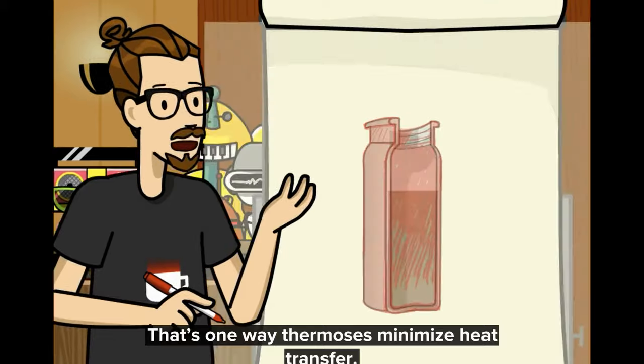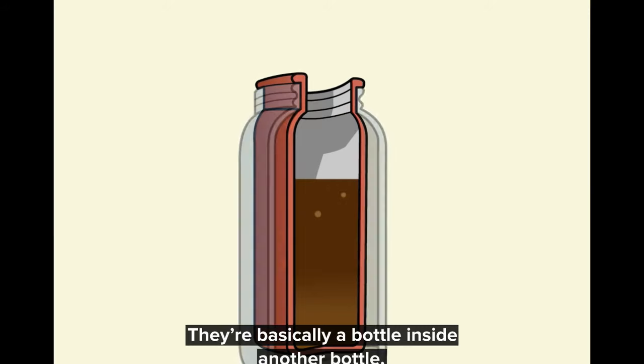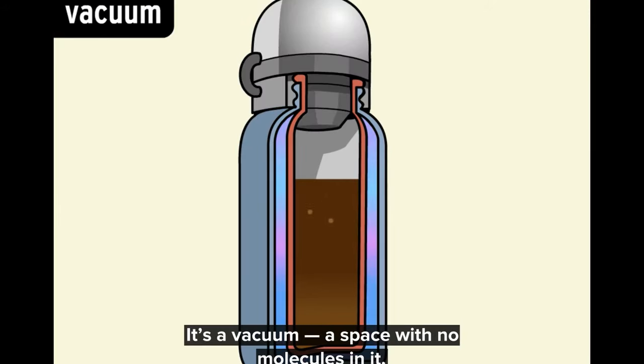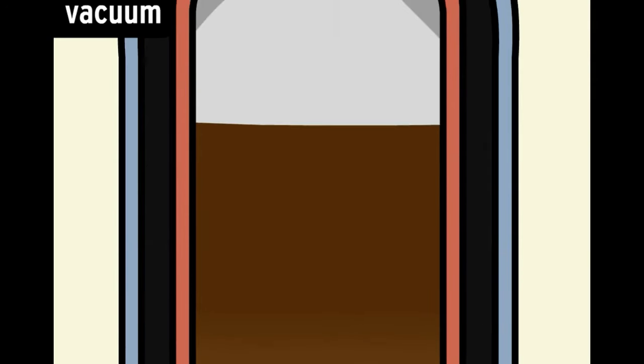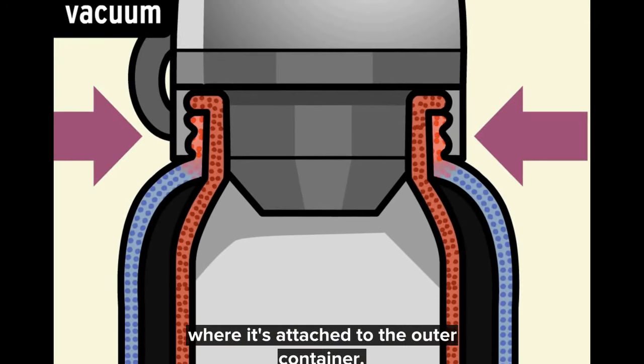That's one way thermoses minimize heat transfer. They're basically a bottle inside another bottle with empty space in between. It's a vacuum, a space with no molecules in it. So there's nothing there for the molecules in that hot bottle to bump into. Heat loss through conduction happens only at the very top of the bottle, where it's attached to the outer container.